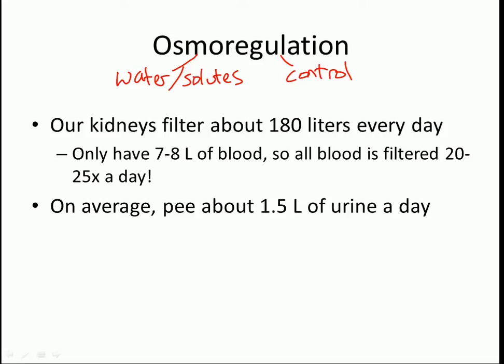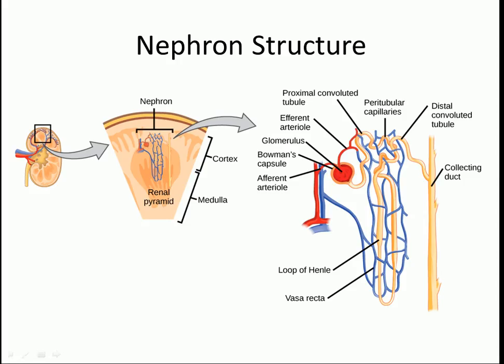So the question is: how do we control this? If we're filtering 180 liters a day, where is the rest of it going? Why aren't we peeing out that much, and why aren't we immediately dying from dehydration? It all comes down to the collecting duct — this control has to do with the collecting duct.